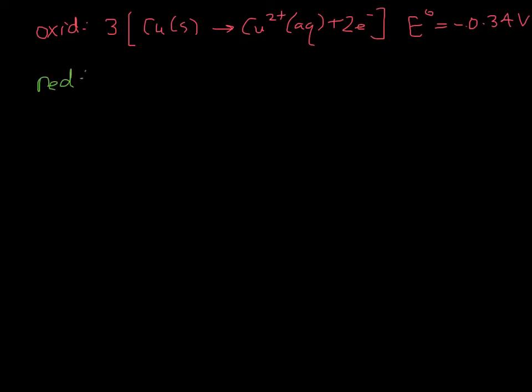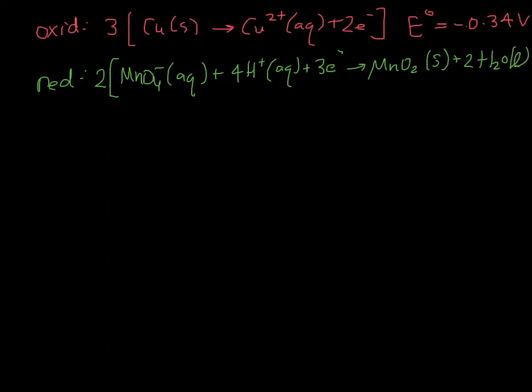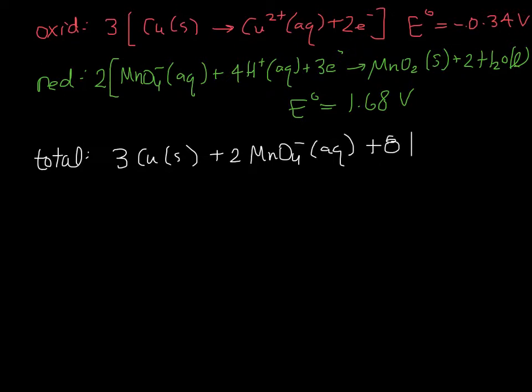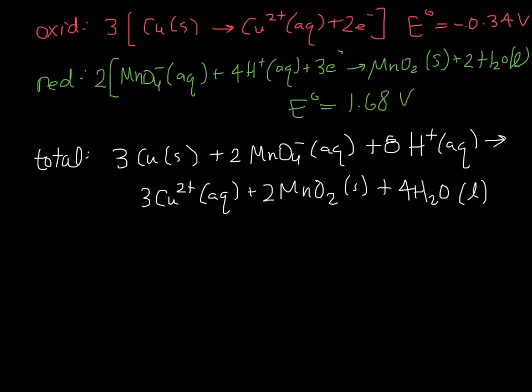For the reduction half reaction, we need to multiply through by 2. That has a cell potential of 1.68 volts. So we can write the total reaction as 3 copper plus 2 MnO₄⁻ plus 8 hydrogens forming 3 copper ions. You'll notice here that I am leaving out those different concentrations because for the standard cell potential, we are assuming that they are all 1 molar.